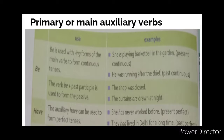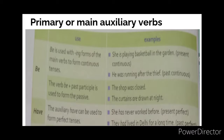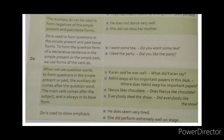The second primary auxiliary is 'have,' used when making sentences in perfect tense. For example, 'She has never worked before' — 'has' is used to make present perfect tense. We can similarly use 'have' to make past perfect tense sentences. Moving on, the third primary auxiliary is 'do.'